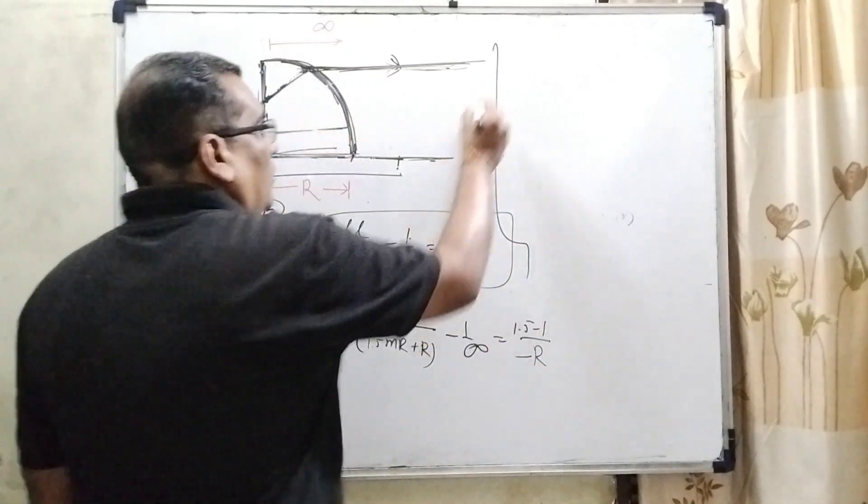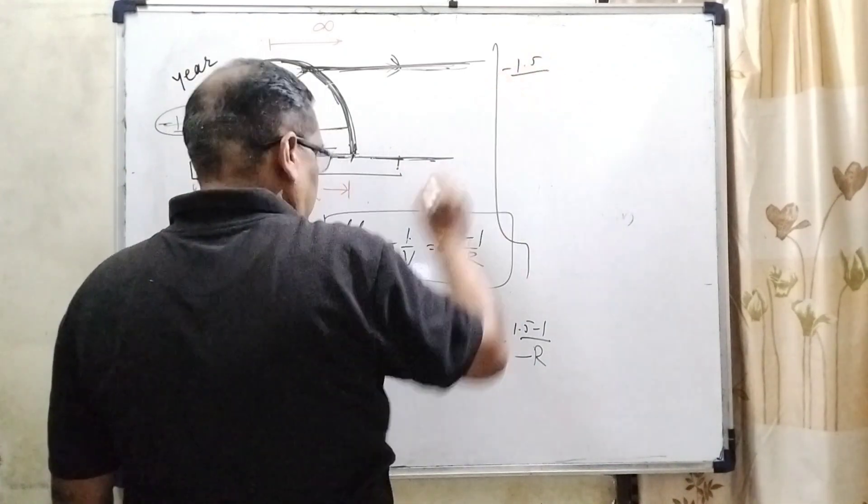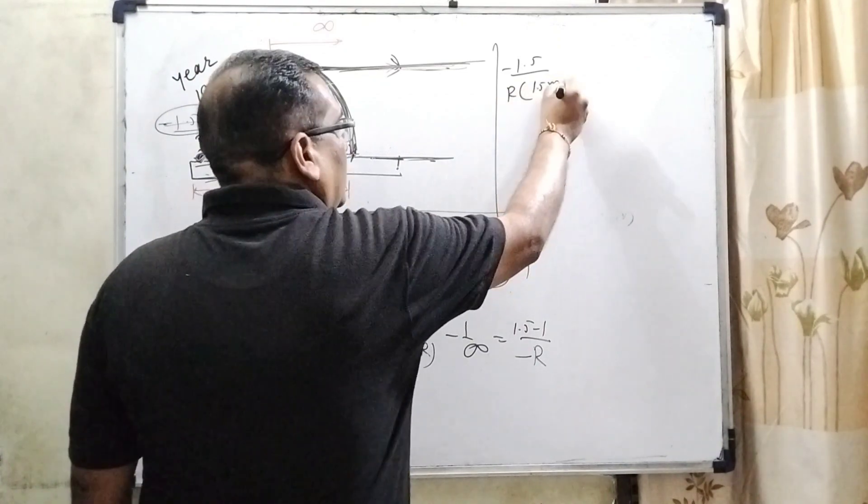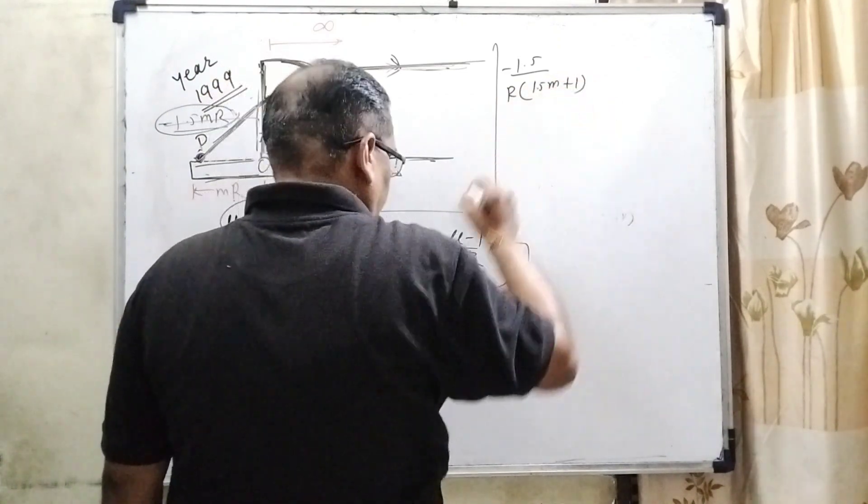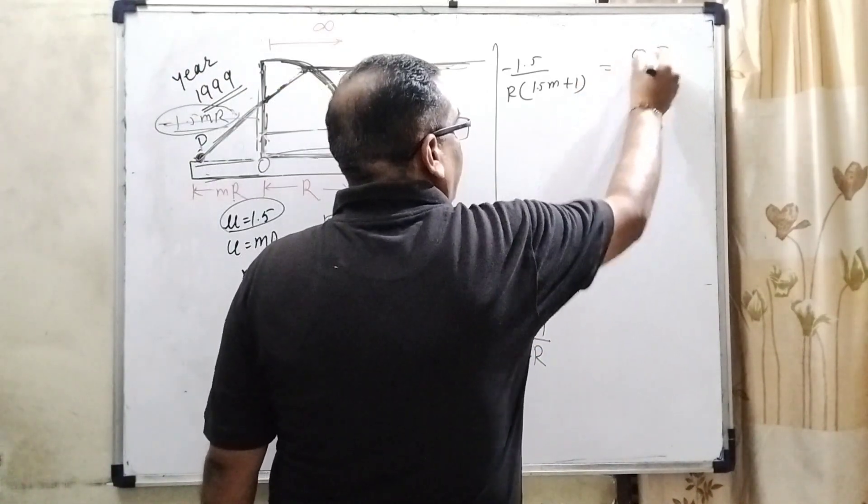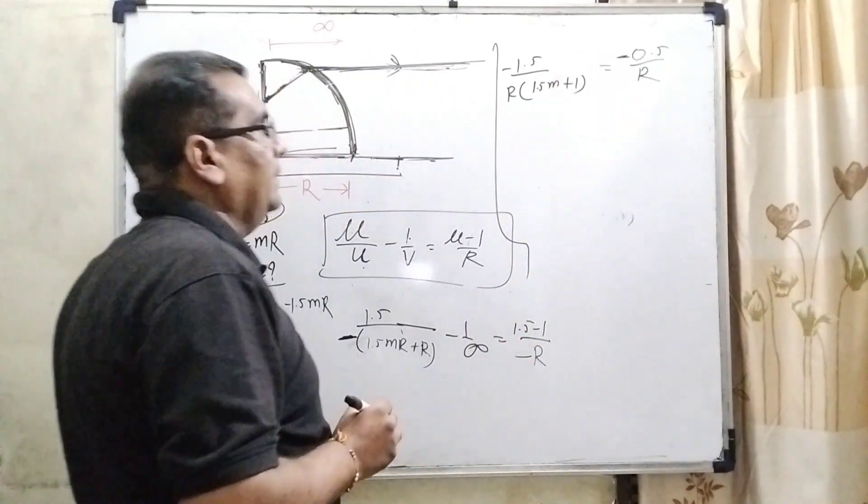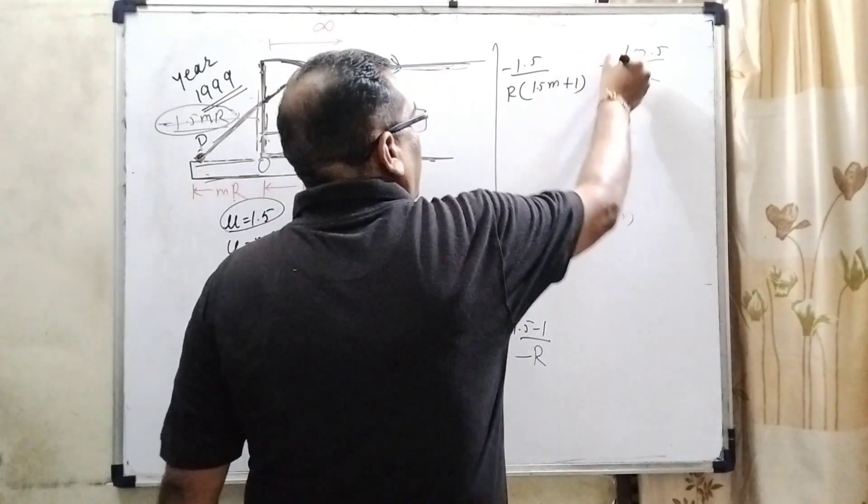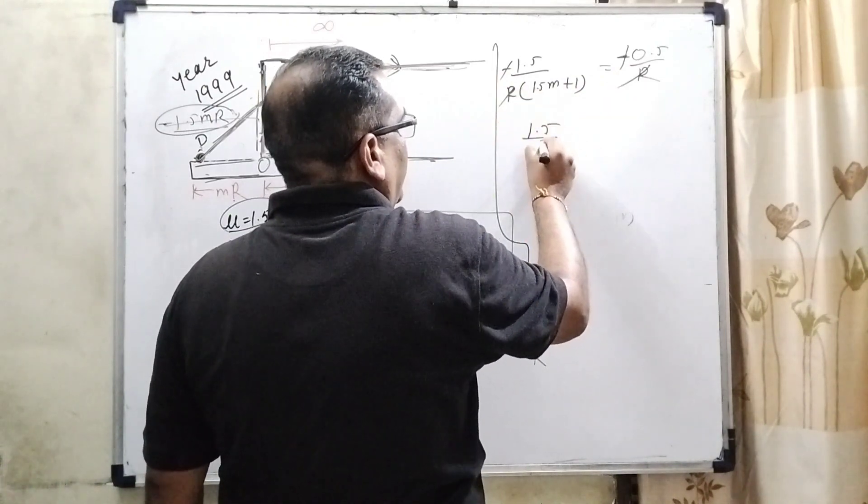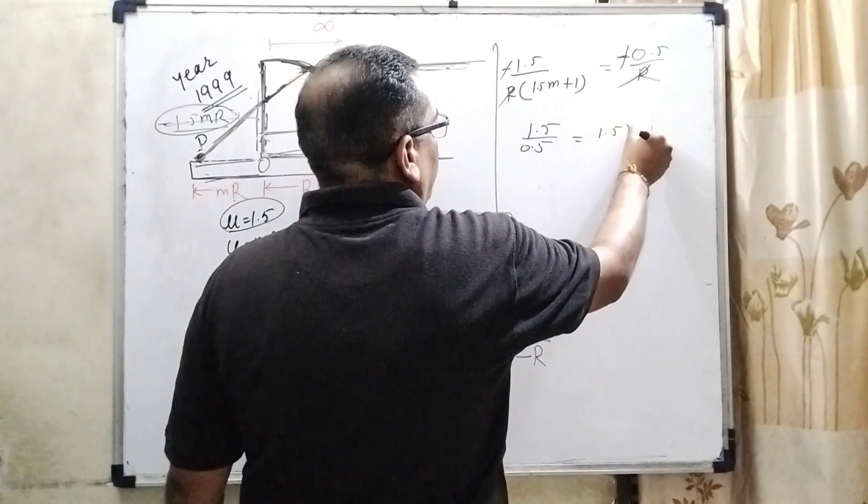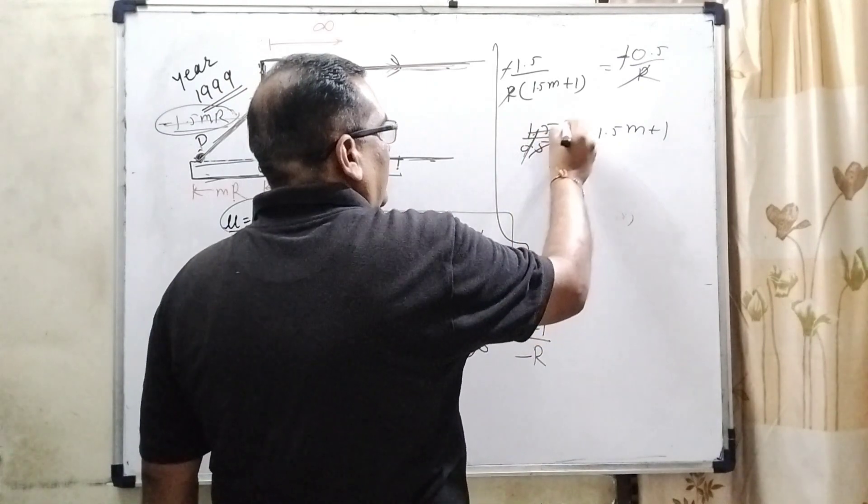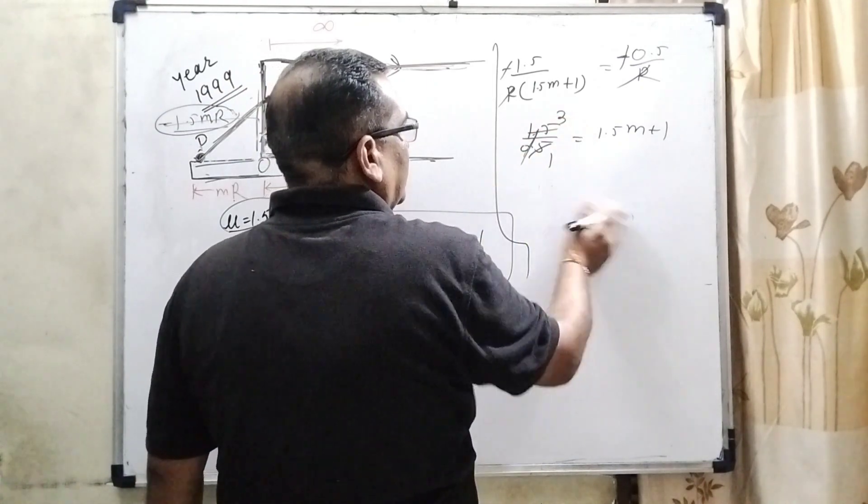Now 1.5 minus, here r taken common, 1.5 m plus 1. Something upon infinity becomes 0. So here 0.5 negative by r. Here minus minus cancel out. This r cancel out. 1.5 divided by 0.5 equal to 1.5 m plus 1. 1.5 is 15 by 10, 0.5 is 5 by 10, then 3.